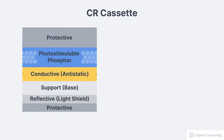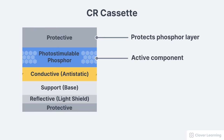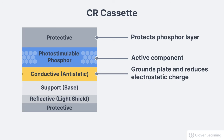The protective layer protects the phosphor layer, which is the active component of the plate. The conductive layer serves to ground the imaging plate and reduce electrostatic charge. The reflective layer serves to direct the emitted light in the imaging plate reader.